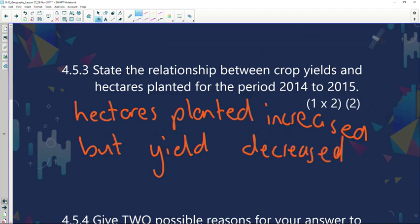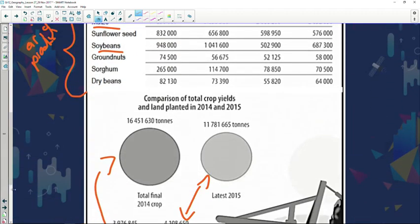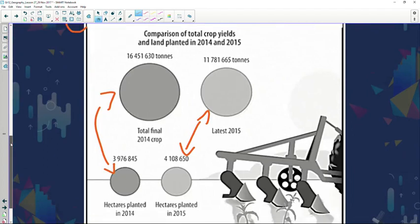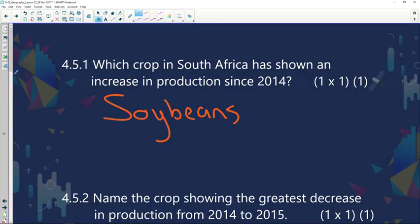If I go back to this graph, if you look over here, more hectares has been planted, so we used more land to plant crops but less was produced. And in 2014 we planted less but more was produced in the end of the day. So that's the question that's being asked over there.